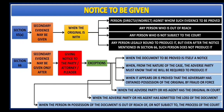The third exception is when it appears or is proved that the adversary has obtained possession of the original by fraud or force. If the document is in the possession of the adverse party through some fraud or force, then without notice a secondary evidence may be given. The fourth exception is when the adverse party or his agent has the original in the court. In that case the party cannot do anything, and secondary evidence may be given without notice because it is already in the court.